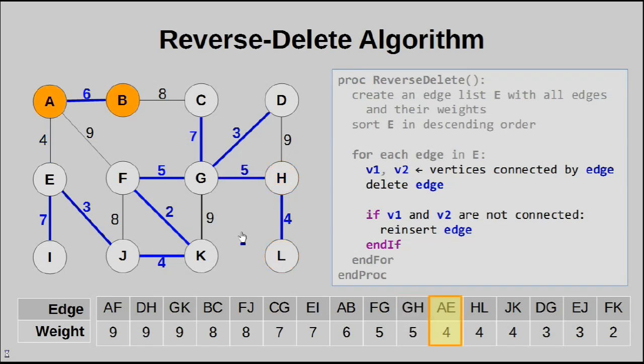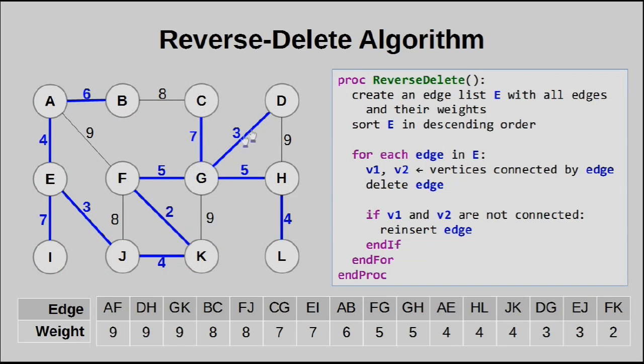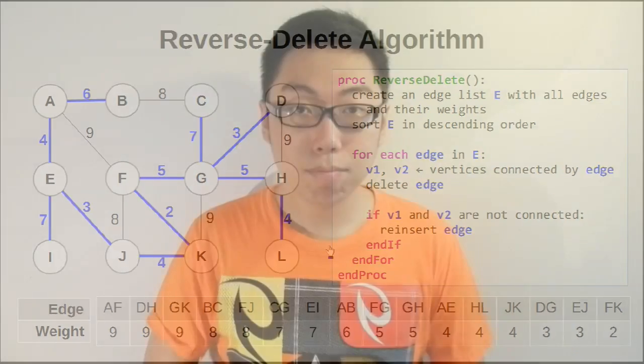Basically, the same deal applies for all the subsequent edge removals. We realize that we cannot reliably remove any more edges because every time we try to do that, some part of the graph gets broken away. The algorithm now terminates, and every edge we have left actually forms our minimum spanning tree. So yeah, that is how the reverse delete algorithm works. And there you go. That is the reverse delete algorithm.